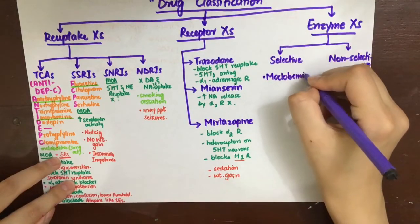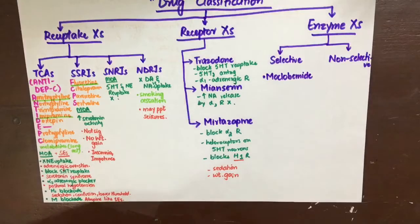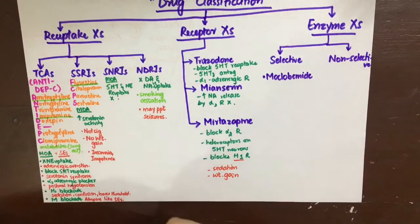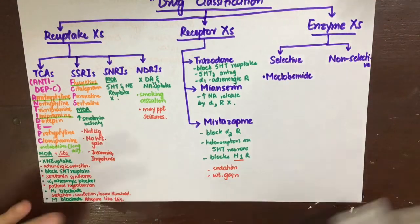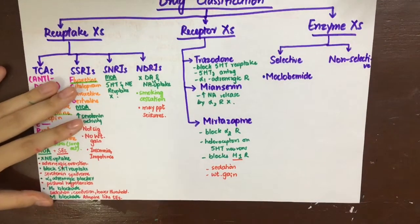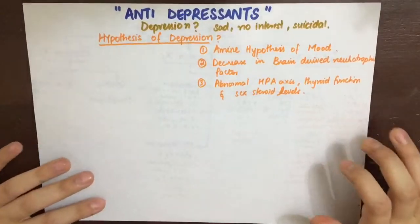MAO-A, that is mainly responsible for norepinephrine, serotonin, and tyramine metabolism, while MAO-B, which is responsible for dopamine metabolism. So these selective enzyme inhibitors will act on MAO-A enzyme and not on MAO-B, while the non-selective will act on both the MAO-A and MAO-B enzymes.